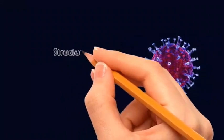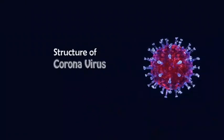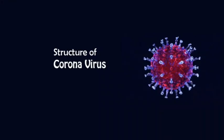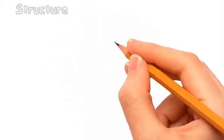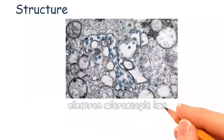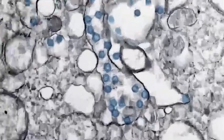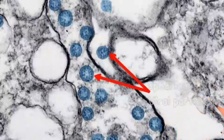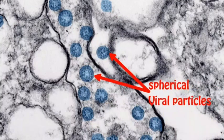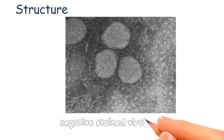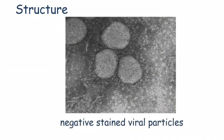We shall now have a detailed look at the structure of coronavirus. The electron microscopic image of an isolate of COVID-19 shows spherical viral particles. This is the image showing negative-stained viral particles.